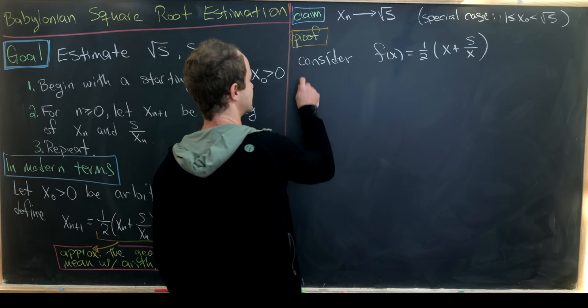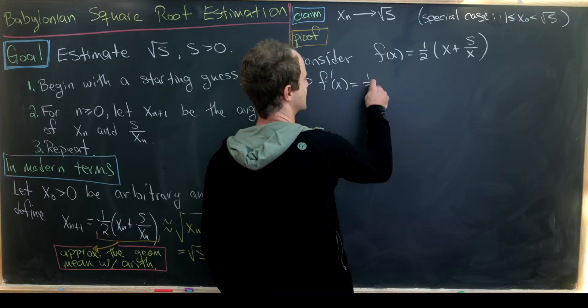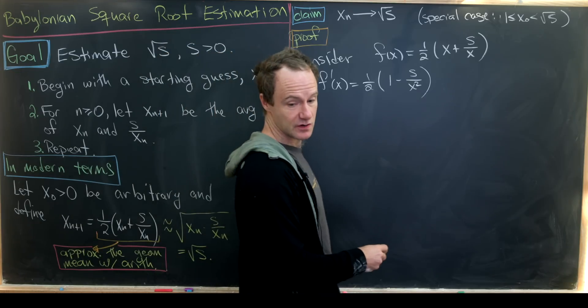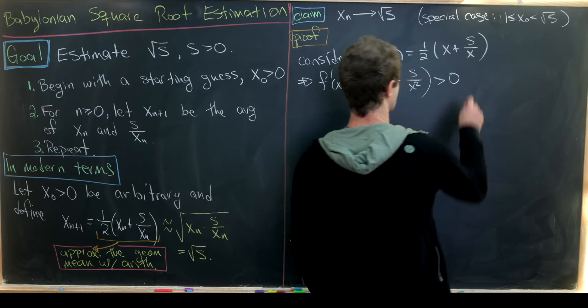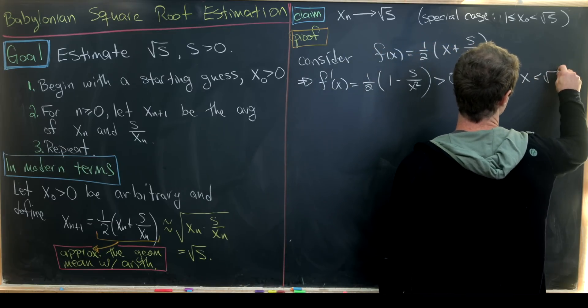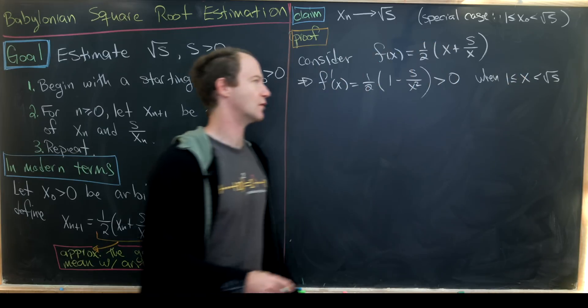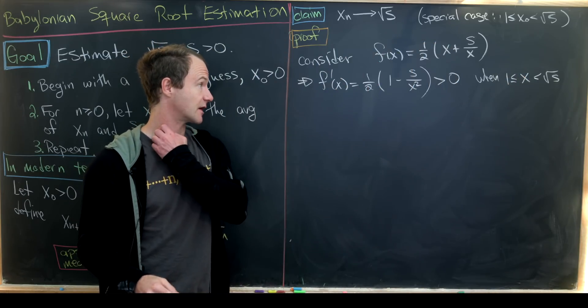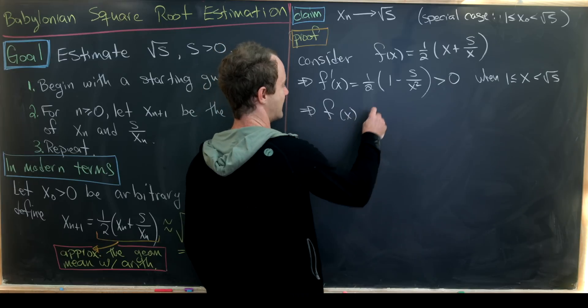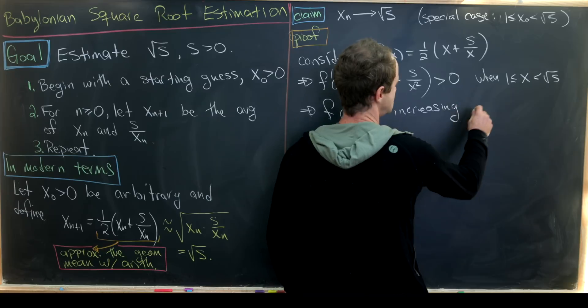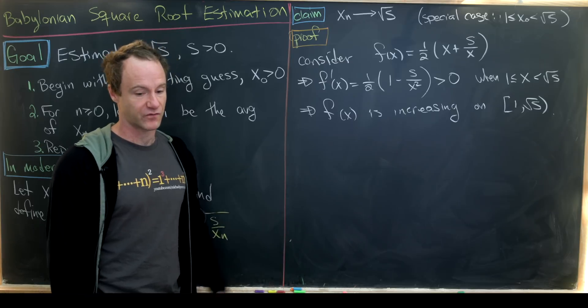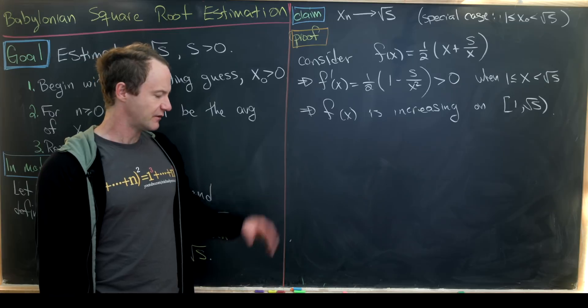We're going to first consider the following function. We're going to use a little bit of calculus here. Let's consider the function f(x) = ½(x + s/x). And then let's take the derivative of this function. So the derivative will be ½(1 - s/x²). But let's notice that this is bigger than 0 when x is less than the square root of s. So in other words, this function is an increasing function. So f(x) is increasing on the interval [1, √s]. That's what we've just shown with the so-called first derivative test.